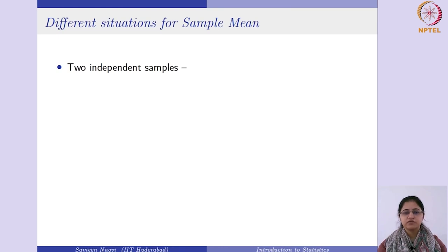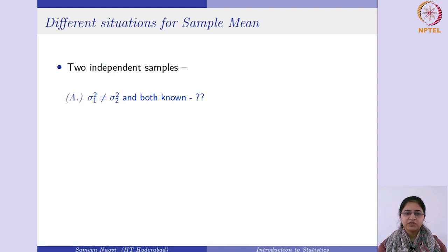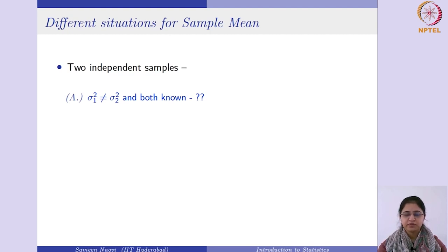If we assume the two samples are independently drawn from the population, then if they are coming from a normal population, the first population has parameters mu1 and sigma1 square, and the second has mu2 and sigma2 square. Since our interest is in mu1 minus mu2, there are certain conditions based on which you can identify the sampling distribution. The first situation is that the two variances are unequal but known.